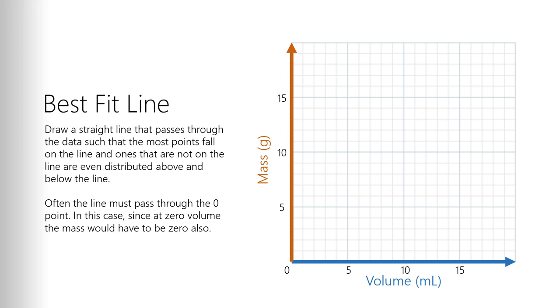Next thing we want to do is we want to look for the best fit line to this data. We want to look for the line that's going to pass through this data in a way such that the points either fall directly on the line, or I evenly distribute any points that aren't on the line above and below it. Now we have a caveat. Since we're dealing with the real-world value here, we know that it's zero volume. When I put no liquid in the graduated cylinder, there is no mass to the material in the graduated cylinder.